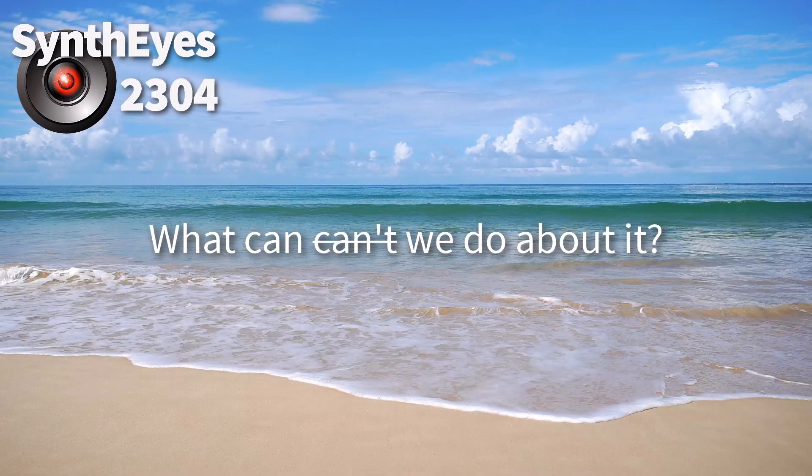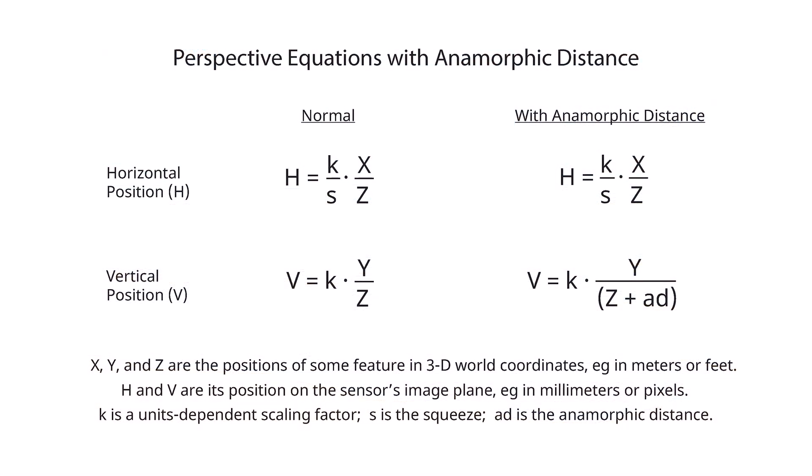The effect of two nodal points requires a 3D solution. We need to change the basic perspective transform. You know, railroad tracks, perspective lines, vanishing points, etc. We'll take a real quick look at what anamorphic distance does to perspective.